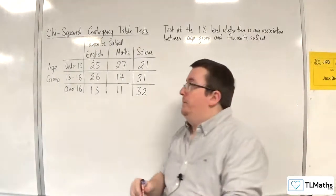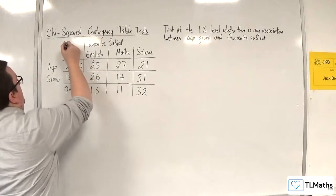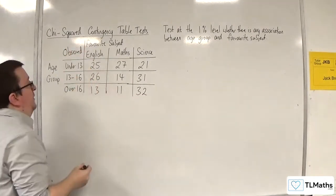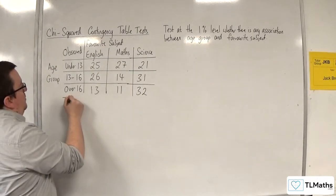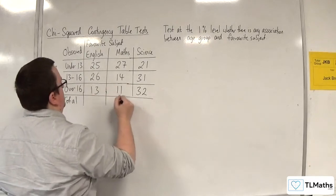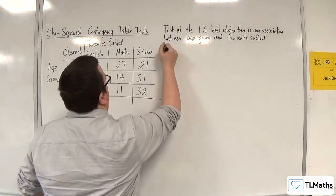So first things first, this is my observed table. These are my observed frequencies. And what I'm going to do is complete the table by writing a total row and a total column.